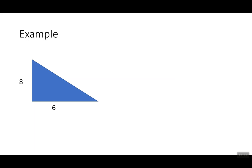So let's start with an example. I have a right triangle that has a height of 8 and a base of 6, and we want to find the missing side, which is the hypotenuse, so let's label that x.